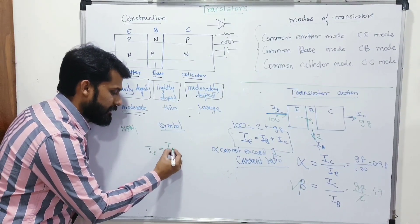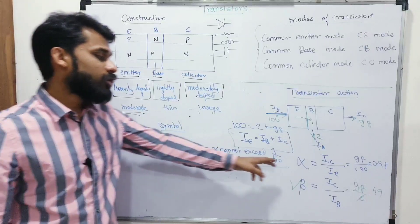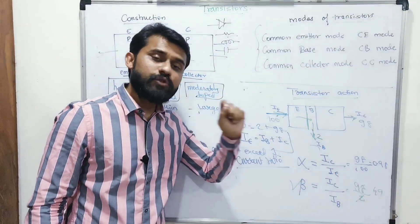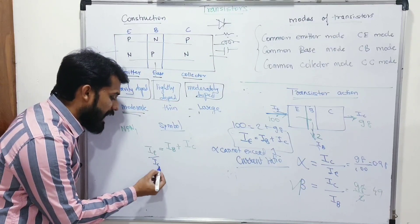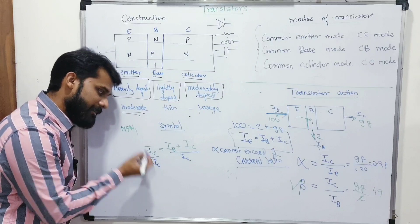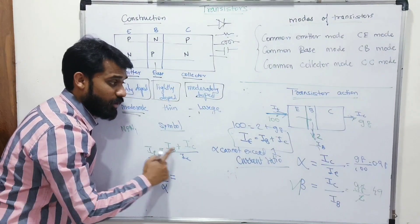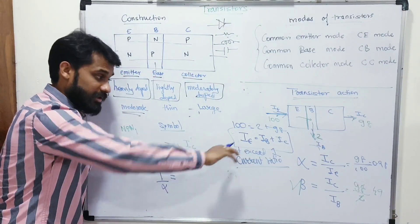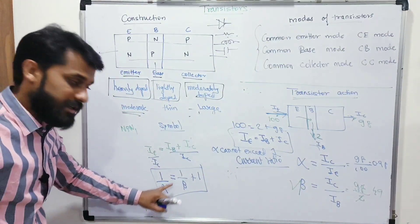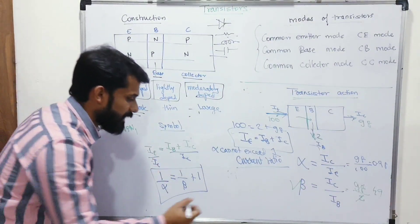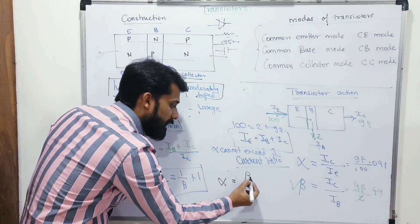Dividing IE = IB + IC by IC gives: IE/IC = IB/IC + 1. Since IE/IC = 1/alpha and IB/IC = 1/beta, we get: 1/alpha = 1/beta + 1. This is the relation between alpha and beta. Cross-multiplying to express alpha in terms of beta: alpha = beta / (1 + beta). Similarly, beta in terms of alpha: beta = alpha / (1 - alpha).